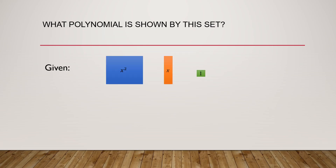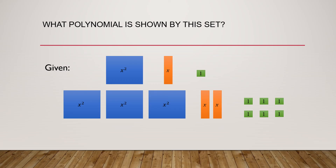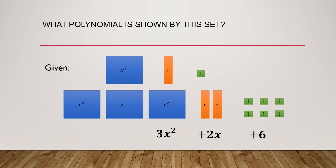What polynomial is shown by this set? Given x squared for the blue tiles, x for the orange tiles, and 1 for the green tiles. We have 3x squared since we have 3 blue tiles, plus 2x since we have 2 orange tiles, plus 6 since we have 6 green tiles. So the polynomial shown by this set is 3x squared plus 2x plus 6.